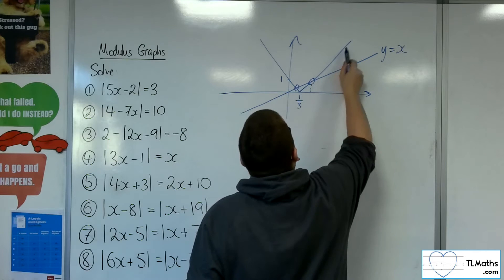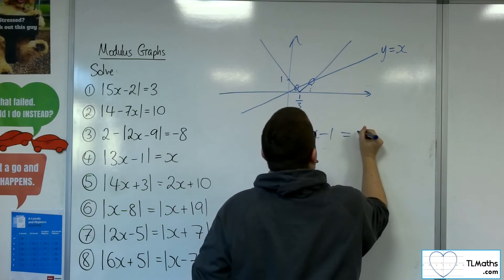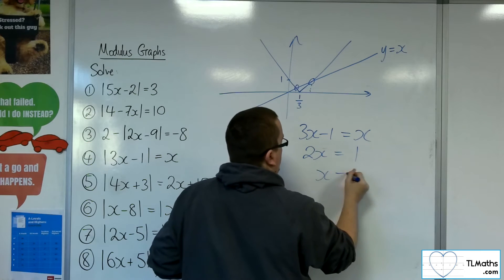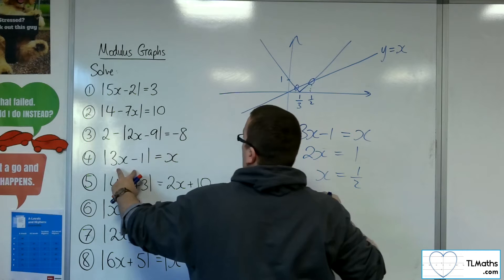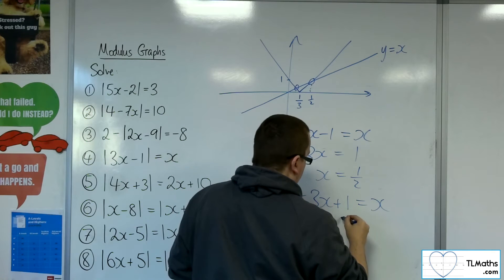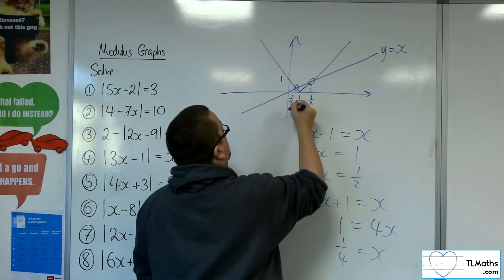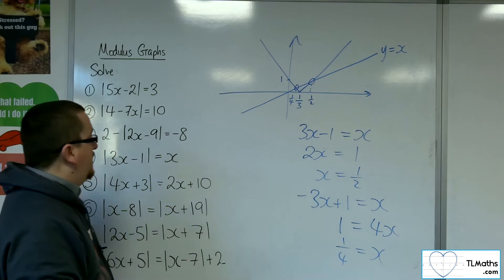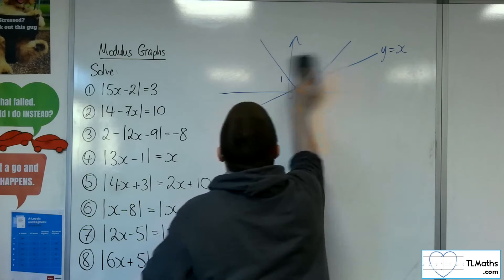This line has positive gradient, so that's where we have 3x minus 1 equal to x. Taking x from both sides and adding 1 to both sides gives x equals a half. This line has negative gradient, so minus 3x plus 1 equals x; adding 3x to both sides and dividing both sides by 4 gives x equals a quarter. The sketch really acts as a checking tool to make sure your results seem reasonable, and once you get into the habit they become pretty quick to do.